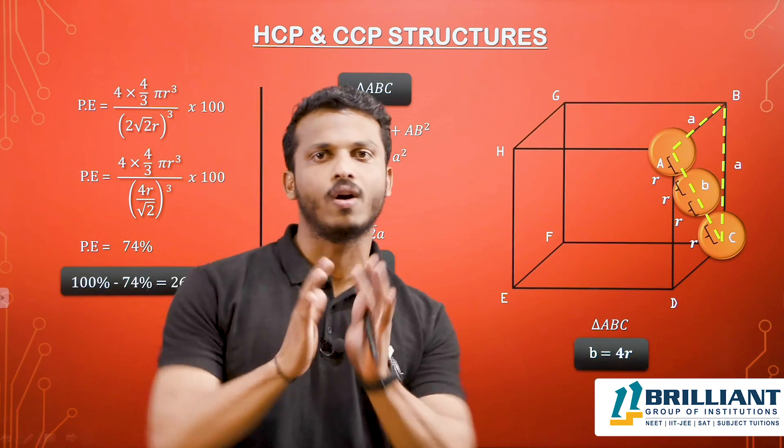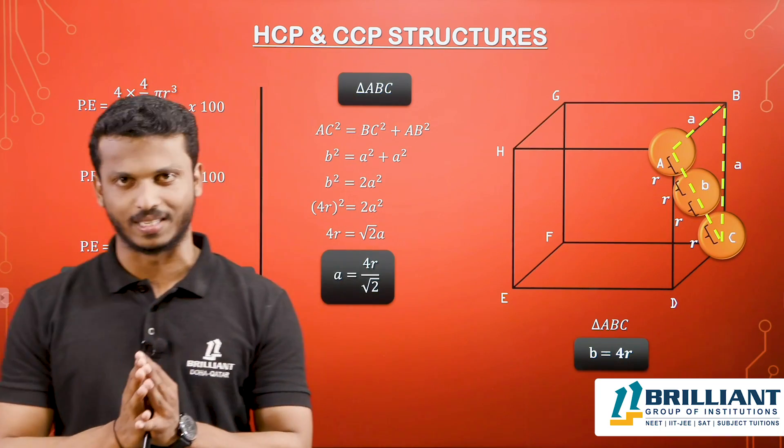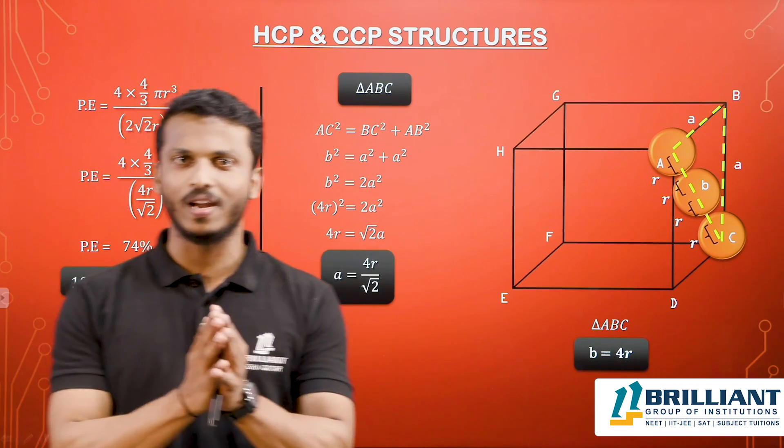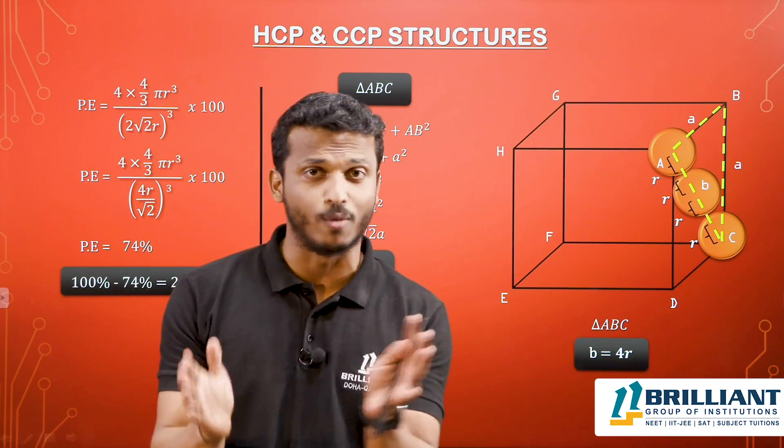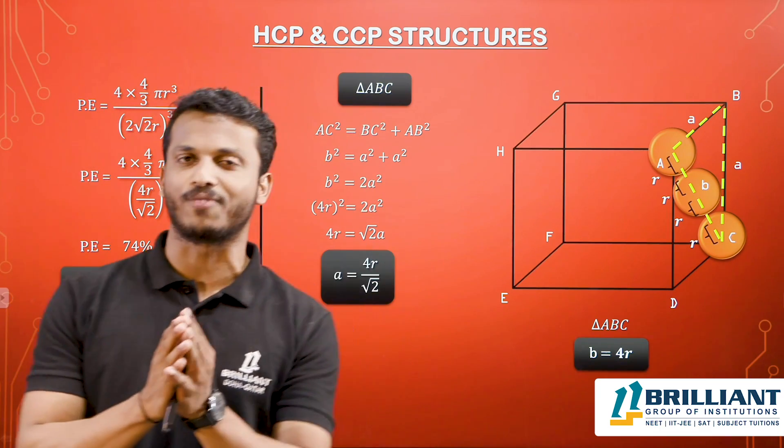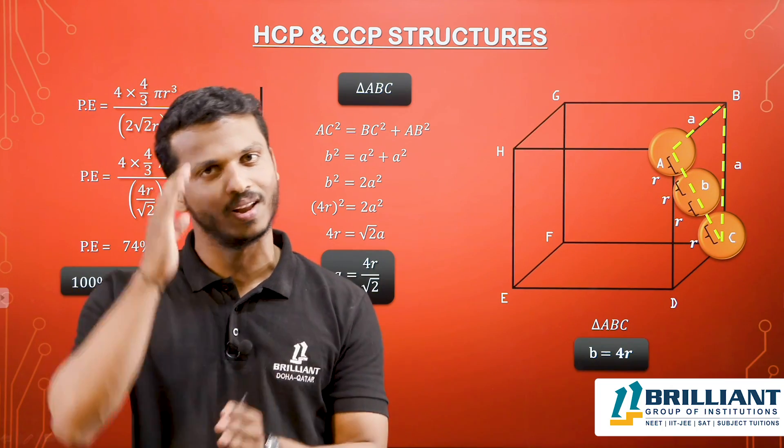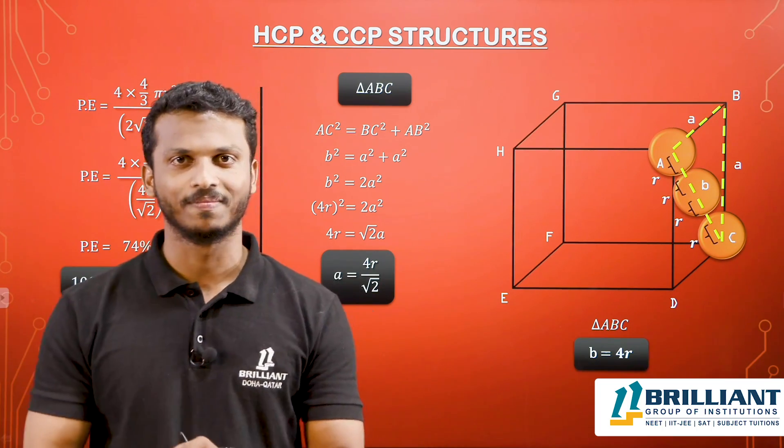So in an FCC/HCP/CCP system, the packing efficiency is 74% and the void is 26%. This is one of the most important concepts from the chapter on solid state. Thank you all, see you again.